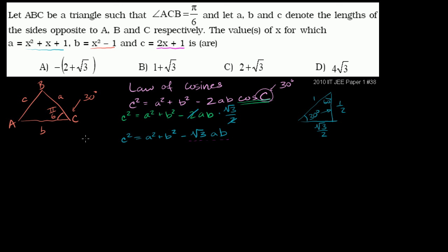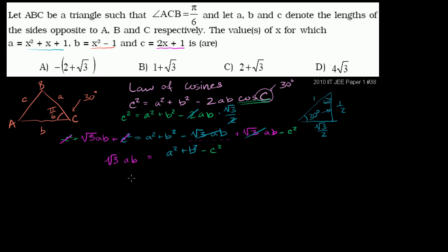So what I want to do is isolate the √3·ab term. Let's add √3·ab to both sides and subtract c² from both sides. We get: √3·ab = a² + b² − c². Now divide both sides by ab. That gives us √3 = (a² + b² − c²) / ab. I've quarantined the √3, so hopefully I'll only have integer stuff on the right side of the equation.